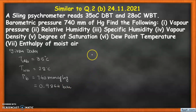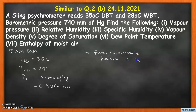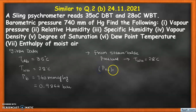Step one is to calculate the vapor pressure using Carrier's equation. For Carrier's equation we need to find the vapor pressure corresponding to the wet bulb temperature. From the steam table, we look up the saturation pressure at the wet bulb temperature of 28 degree centigrade, and we get the saturated pressure at wet bulb temperature as 0.0378 bar.